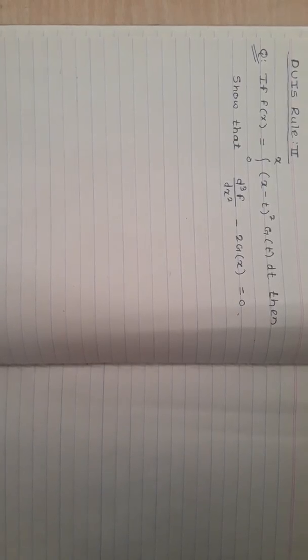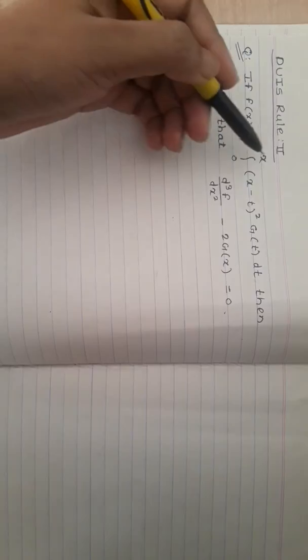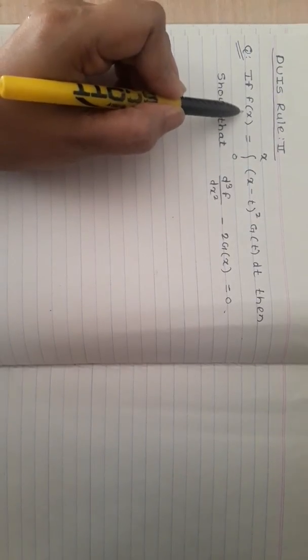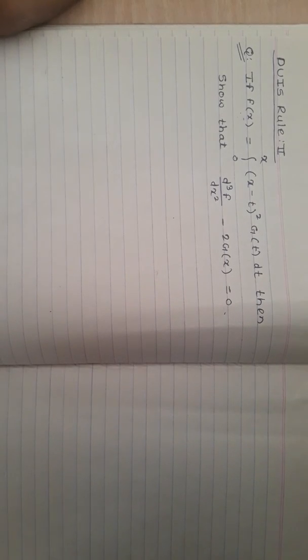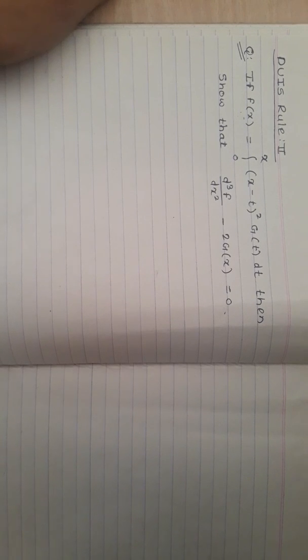In the last session we studied DUIS Rule 2: whenever the integration limits are functions of the parameter — here the parameter is x — we apply Rule 2. If the limits are constants, we apply Rule 1.